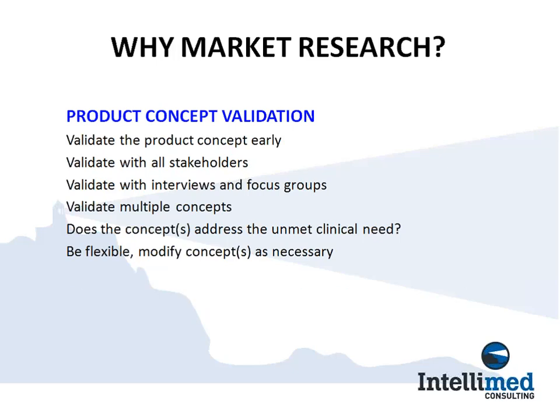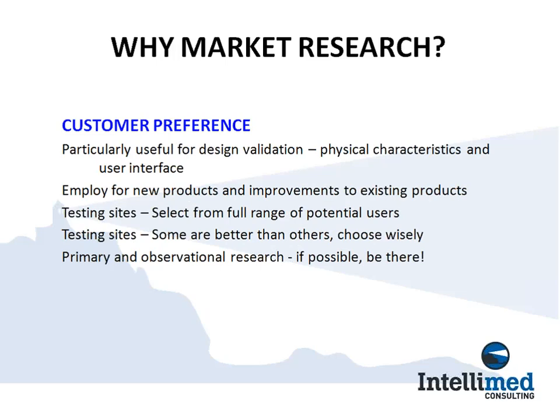Customer preferences: we want to bring the product to the potential user early and often and confirm that what we're doing continues to meet their needs — both for physical characteristics and user interface. This applies to both new products and improvements to existing products. There's a large range of potential users; some sites are better than others — some are well organized, very responsive, and really understand what the product is and what you're trying to do. So choose them wisely. And if possible, be there — it's primary and observational research. If you can get out there, talk to the customer, and see how they do things now, this is invaluable.